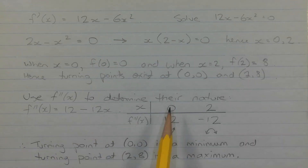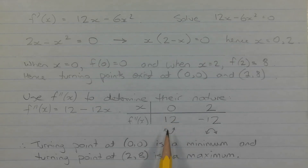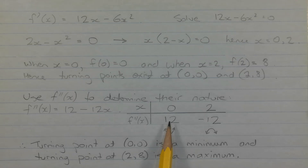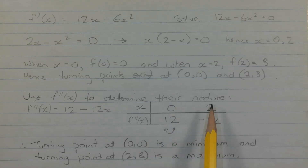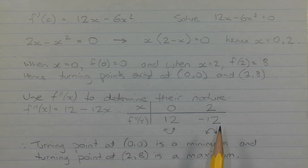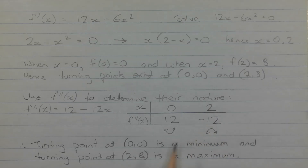When x = 0, the second derivative equals 12, which is positive, meaning the curve is concave up in that region, so the turning point at x = 0 is a minimum. When x = 2, the second derivative equals −12, which is negative, meaning the curve is concave down, so the turning point at x = 2 is a maximum. Therefore the turning point at (0, 0) is a minimum and the turning point at (2, 8) is a maximum.